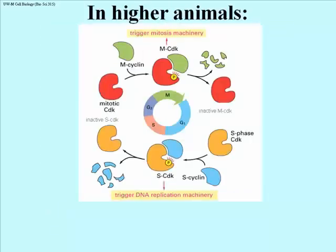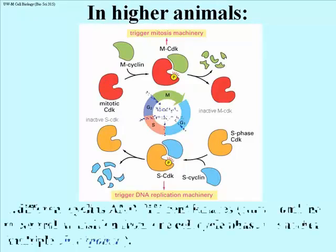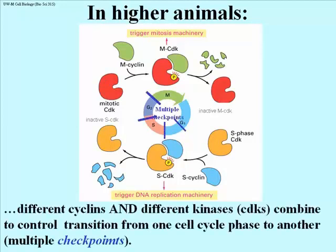Here is an illustration of cell cycle control in higher animals. We see S phase and M phase CDKs as well as S and M cyclins. We now know that there are even more checkpoints controlled by different cyclin and CDK combinations.